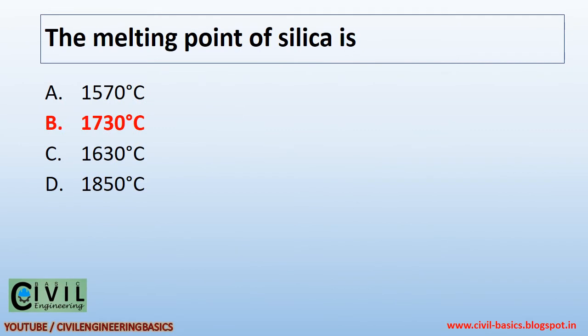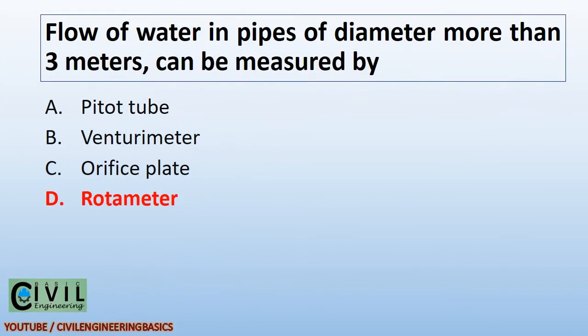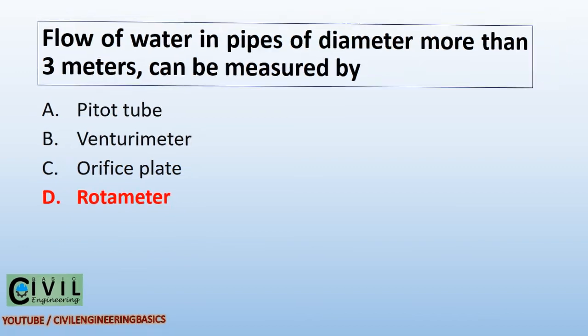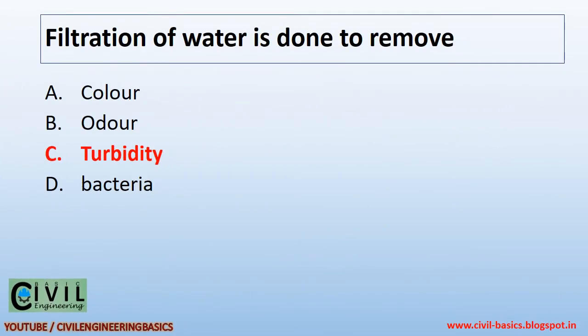The melting point of silica is 1730 degrees Celsius. Flow of water in pipes of diameter more than 3 meters can be measured by rotometer. Filtration of water is done to remove turbidity.